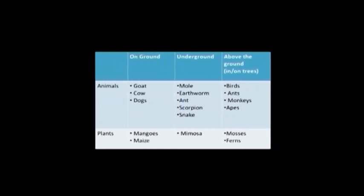Now look at some examples of plants and animals in various terrestrial habitats. On the ground, we have animals like goats, cows, dogs, and plants like mangoes and maize. Under the ground, we have animals like mole, earthworm, ants, scorpion, snake, and plants like mimosas. Above the ground, in and on trees, we have animals like birds, ants, monkeys, apes, and plants like mosses and ferns. See more examples of plants and animals that live in Nigeria's rainforest, savannah, and desert places.